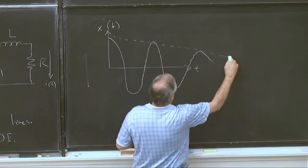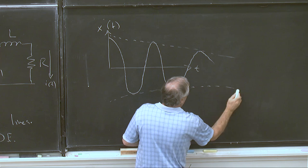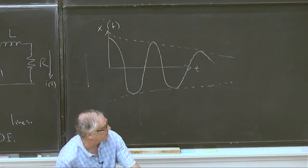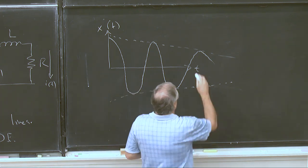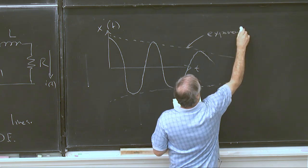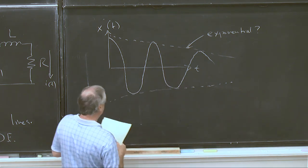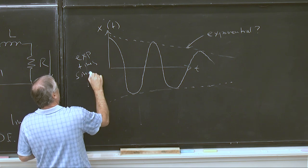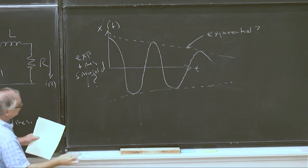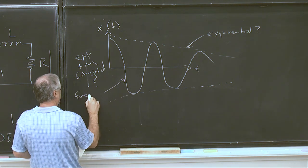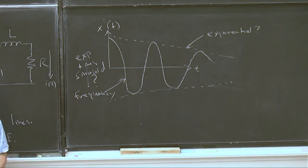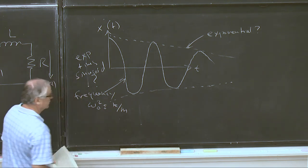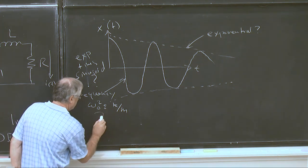And maybe it dies out with time. So it's going to, so if I draw an envelope through the peaks, through the peaks of this, we see, well, you know, maybe it's some kind of exponential decay. And so maybe we have an exponential times a sinusoid. It's kind of what it looks like. What's the frequency of this? Well, we have a well-defined frequency in this thing. That's our natural frequency of the oscillator, which is by definition K over M. Is that the frequency? Well, I don't know. It's a good first guess.